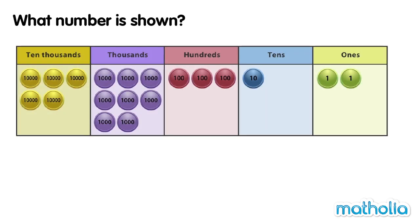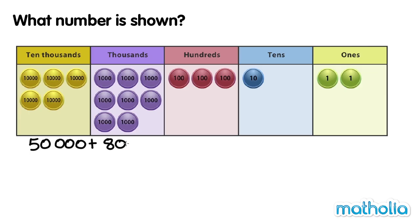What number is shown? In the ten thousands place, there are five counters. They have a value of 50,000. In the thousands place, there are eight counters. They have a value of 8,000. In the hundreds place, there are three counters. They have a value of 300.